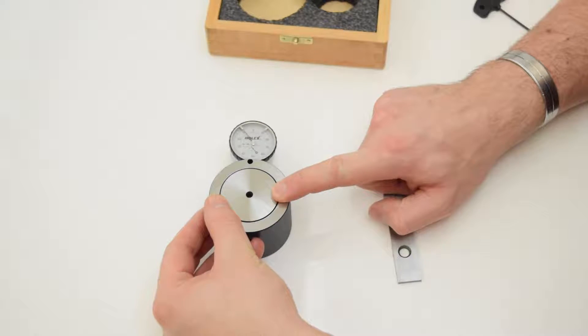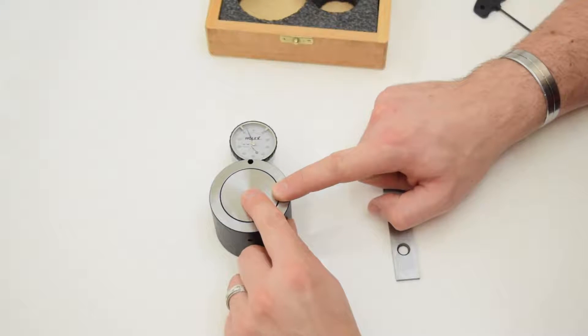So now you would lower your tool down until you read 0. This would be exactly 50mm above the table.